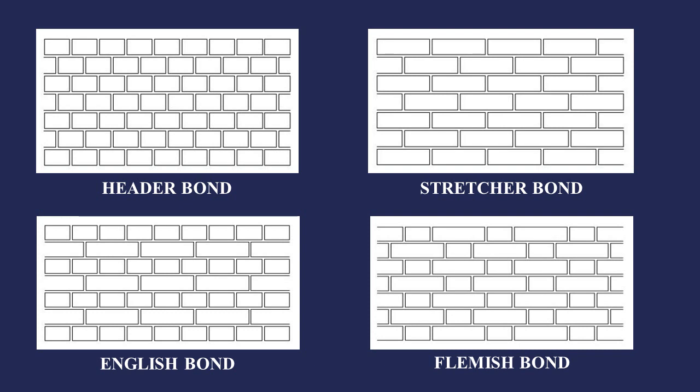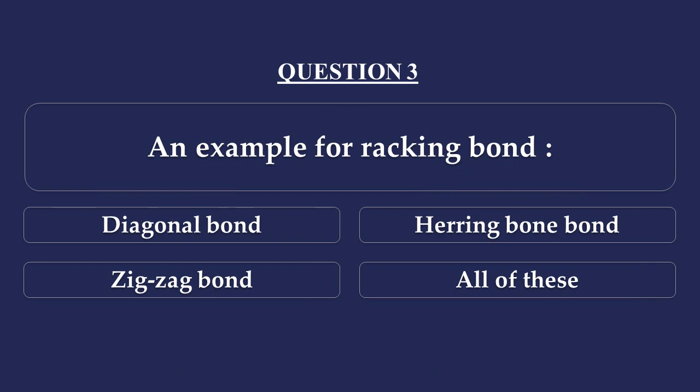Question number 3. An example of a racking bond: Option A - Diagonal bond, Option B - Herringbone bond, Option C - Zigzag bond, Option D - All of these.